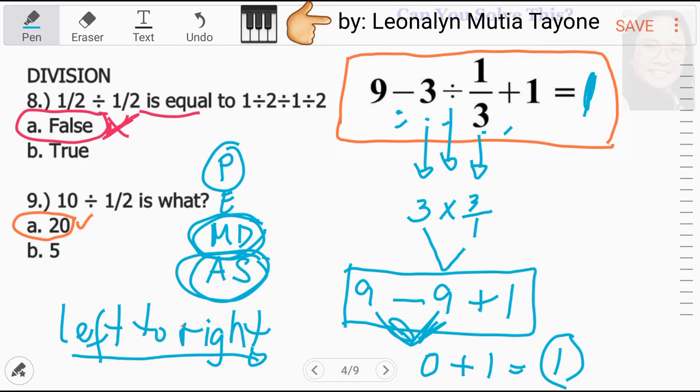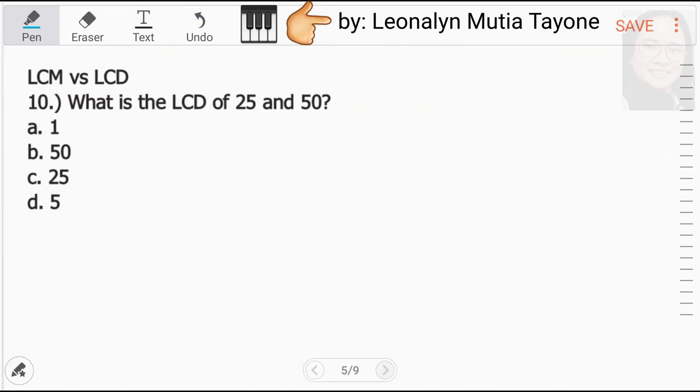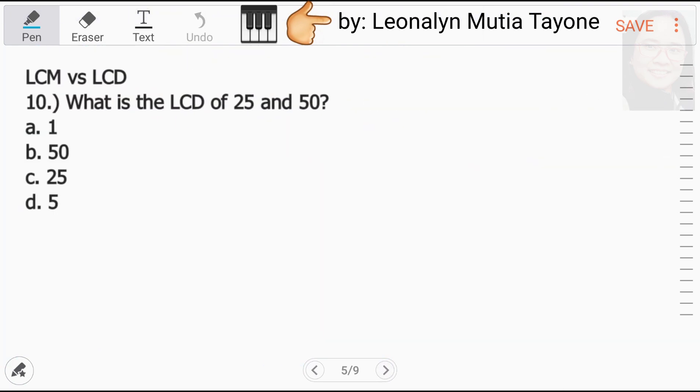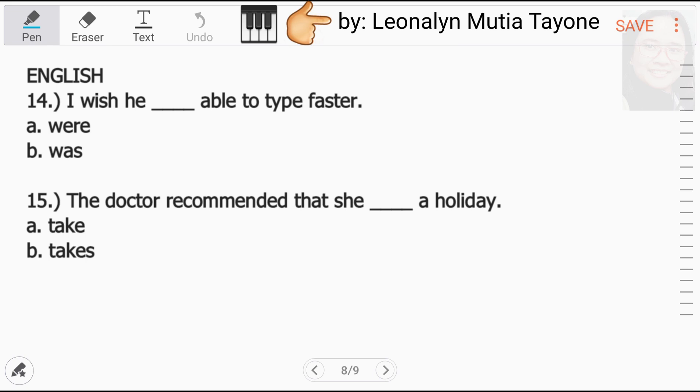Kung sakaling meron pa rin naguguluhan tungkol dito sa question na ito, itong equation na ito, later na lang, mag-upload ulit tayo ng video about dito na may kumpletong references. Bali, ulitin lang natin. Kung sakali lang, titingnan natin. So, dito ang sagot na ay 1. Ngayon, abangan na lang with regards sa LCD versus LCD, LCM versus LCD, Venn Diagram, at saka yung Subjunctive Mood. Malapit na tayong matapos dito.